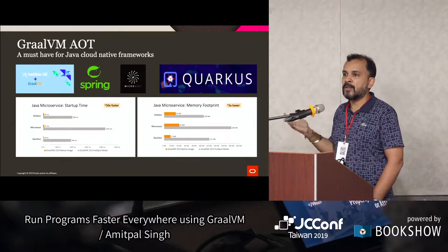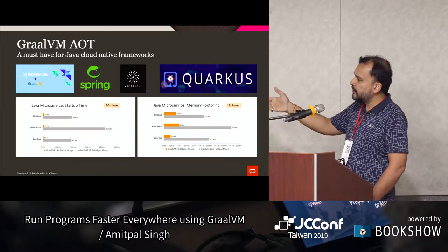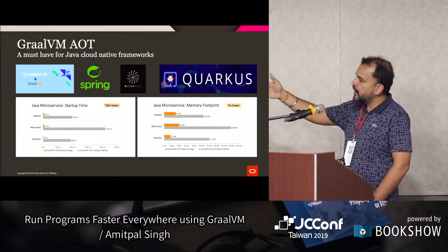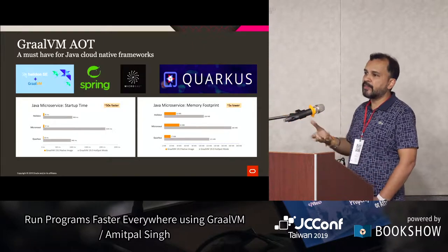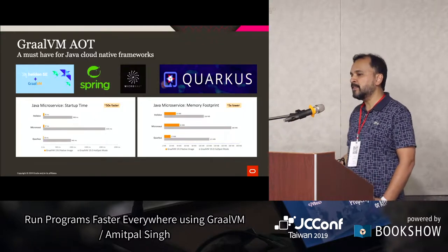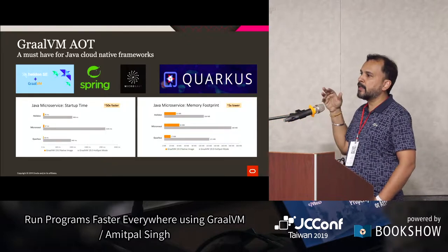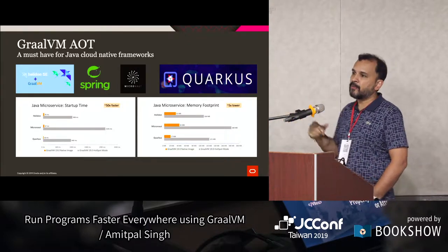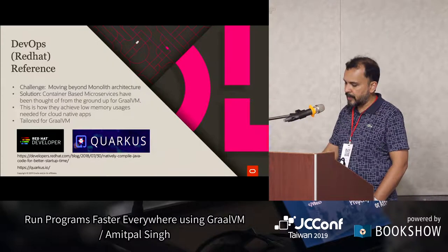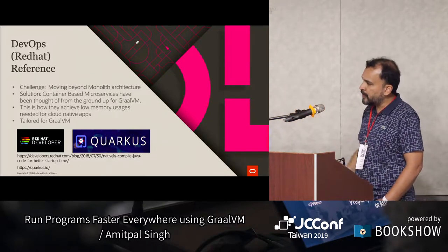Looking at microservices, the popular framework today is Micronaut — a Micronaut startup is about 50 times faster compared to regular HotSpot. This compares JIT versus AOT mode both within GraalVM. Helidon is a microservices framework from Oracle, and Quarkus comes from Red Hat — a container-based Kubernetes framework tailored for GraalVM. The memory footprint is also considerably better. Red Hat's reference shows natively compiled Java code is better — the link shows much faster application response time, smaller container size, and faster startup sequence.